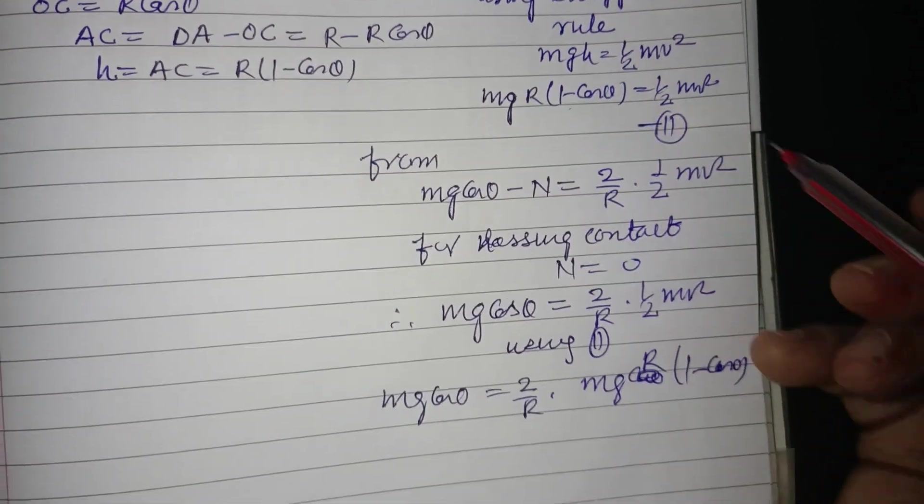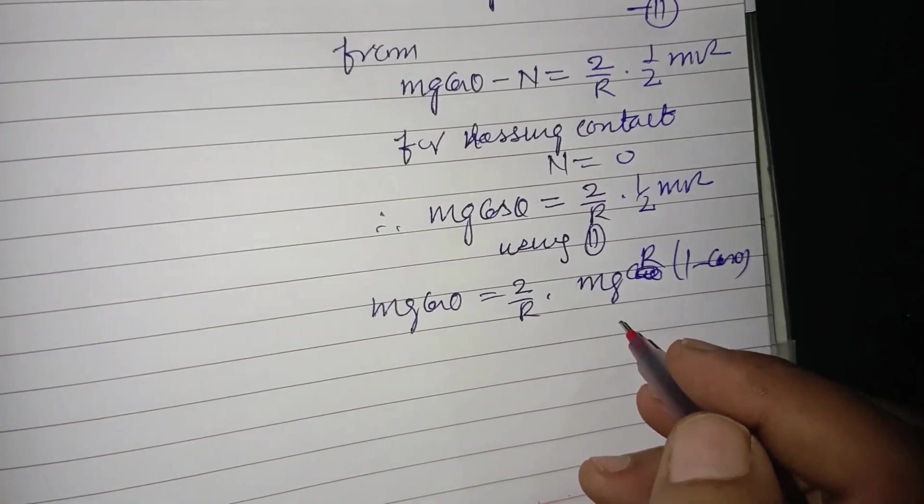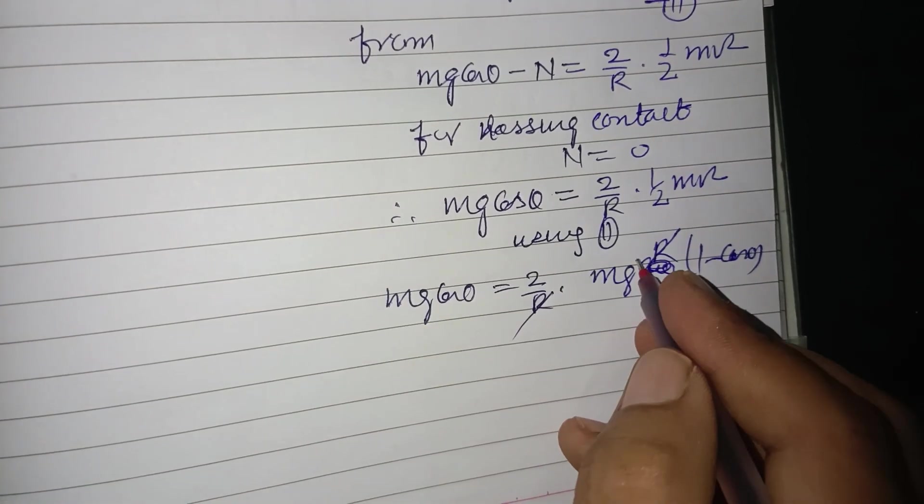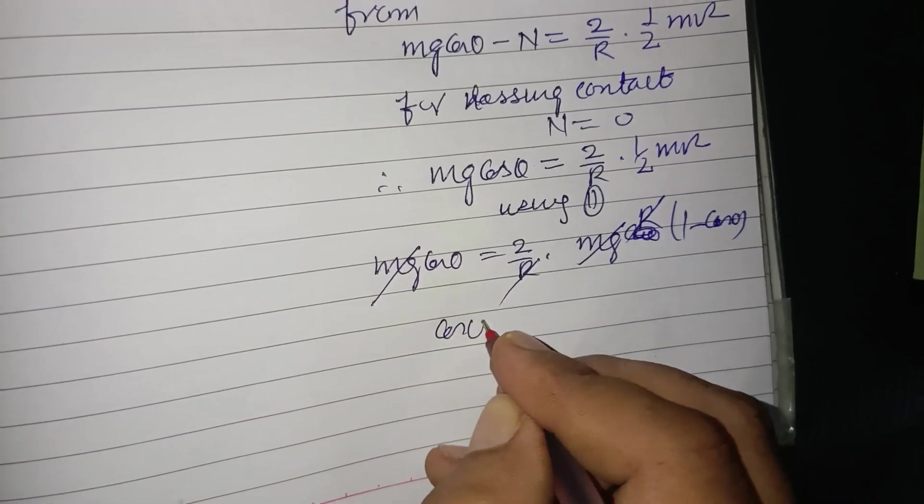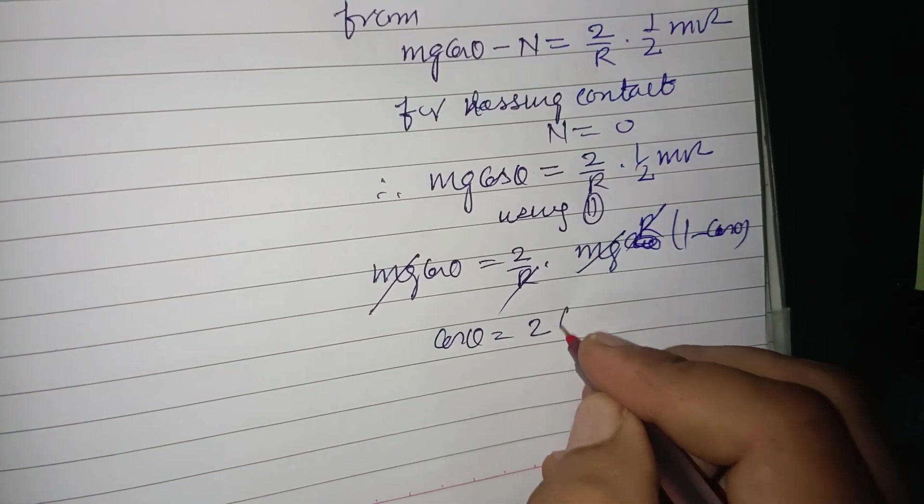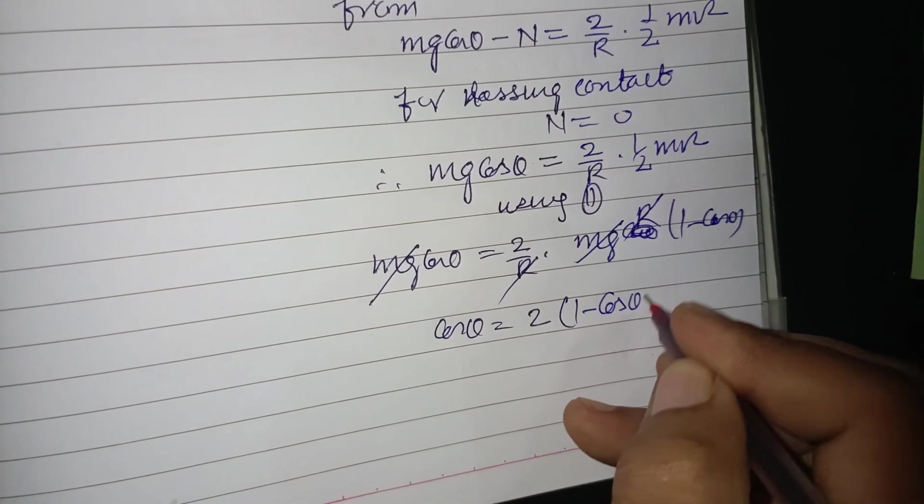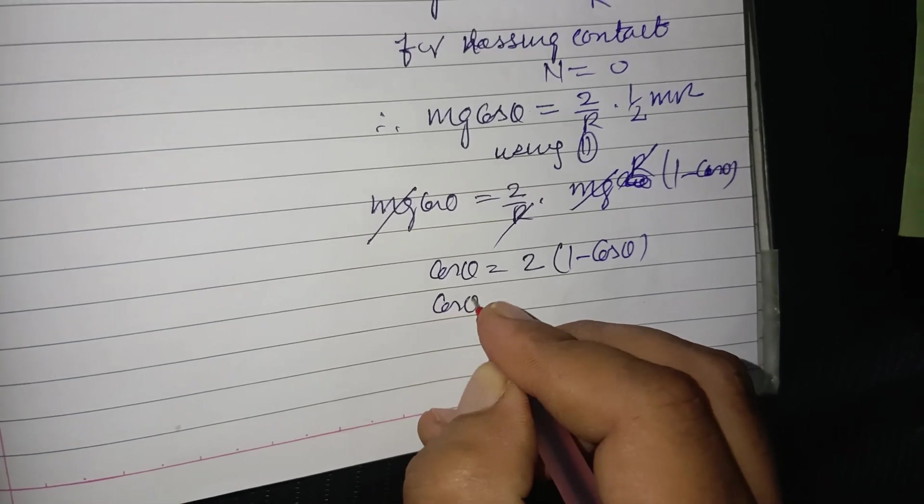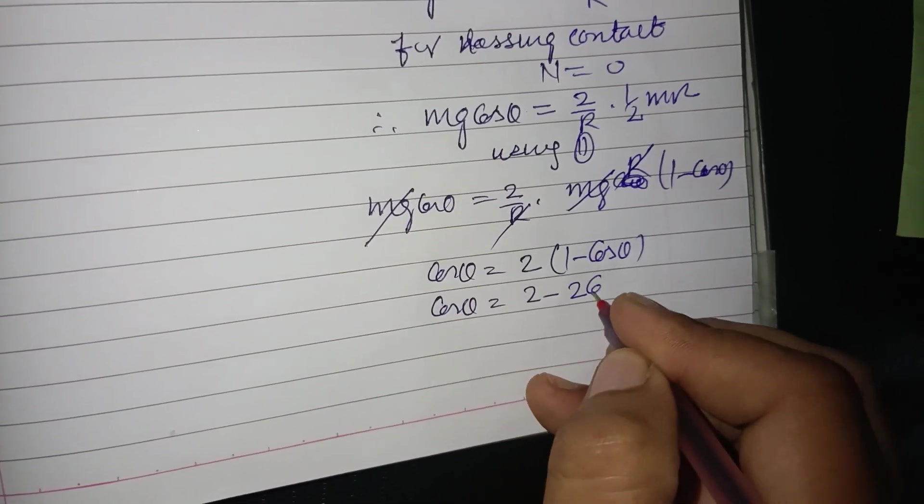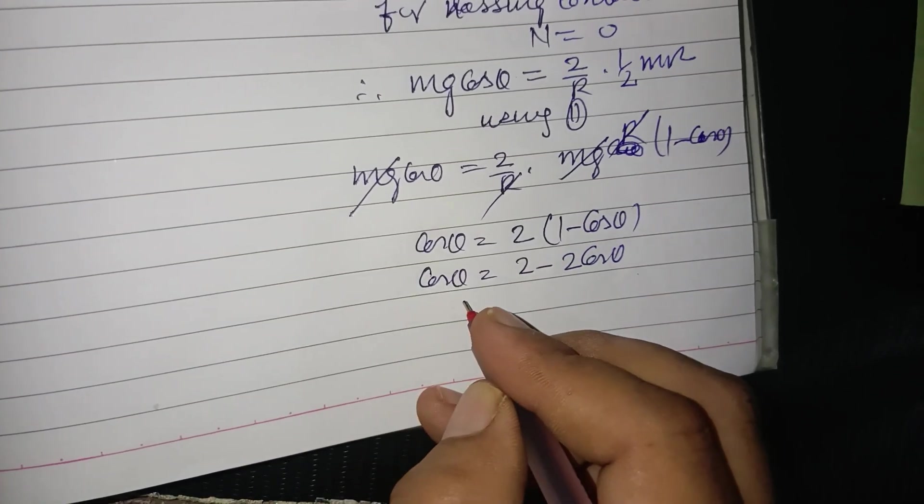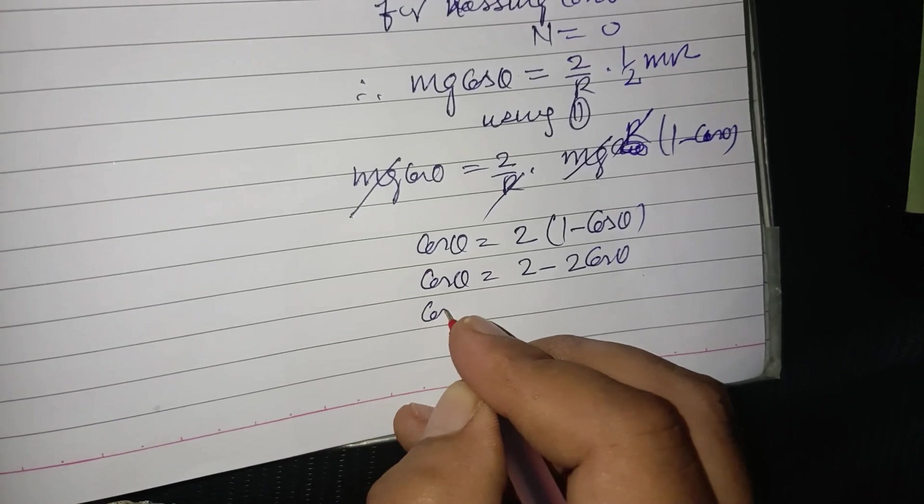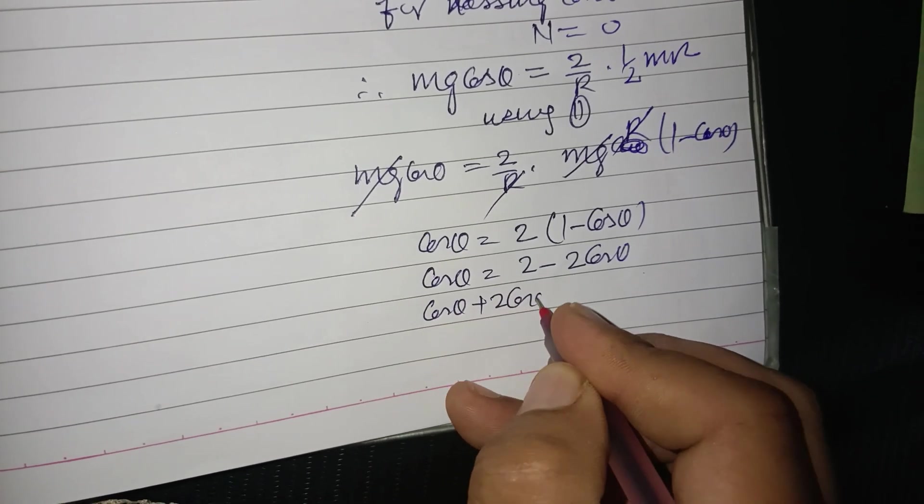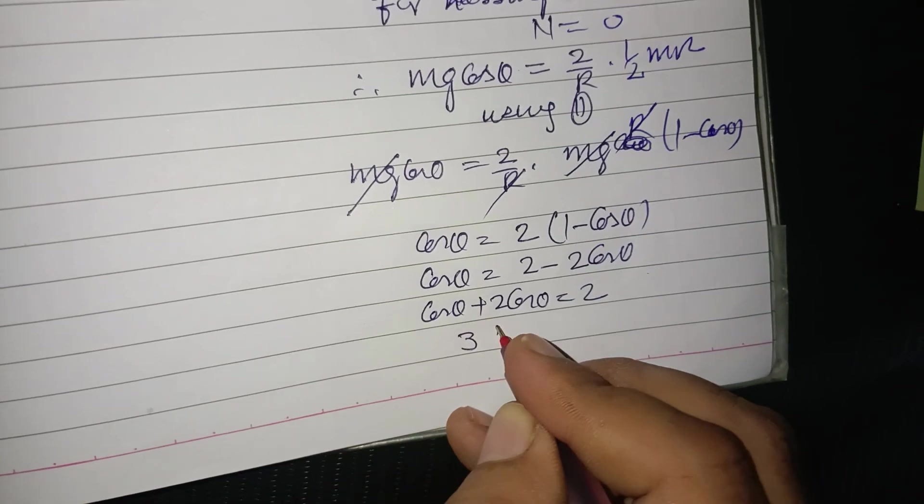Putting this, R cancels, mg cancels. cos theta equals 2 times (1 minus cos theta). cos theta equals 2 minus 2 cos theta. Taking this cos theta to the left side, cos theta plus 2 cos theta equals 2. This is 3 cos theta.